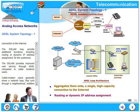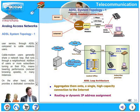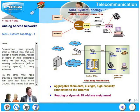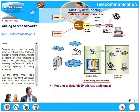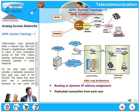The DSLAM provides improved user service through ADSL compared to cable modem users. Cable modem users generally share a network loop that runs through the neighborhood, so addition of users or more subscribers turning on their PCs generally means lowering of performance in terms of speeds. On the other hand, ADSL provides a dedicated connection from each user back to the DSLAM, meaning users won't see a performance degradation as new users are added.